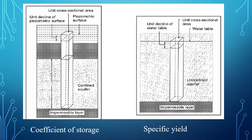In this figure, at the left side the coefficient of storage is shown, and at the right side the specific yield is shown. At the right side, you can see the unconfined aquifer, where the bottom layer is impermeable but the top layer of the aquifer is permeable. That is the water table surface, and the pressure at the water table surface is equal to atmospheric pressure. The unit decline of water table is shown here. Whatever quantity of water is yielded or released due to gravity force is called specific yield in the case of an unconfined aquifer.